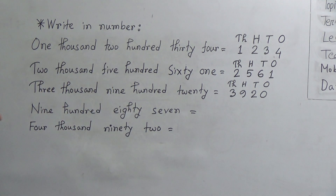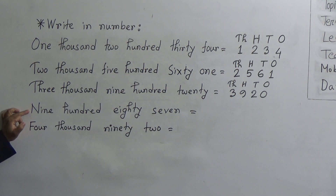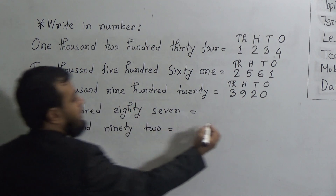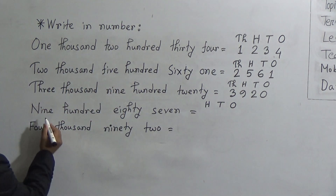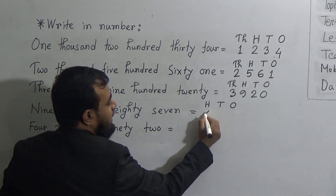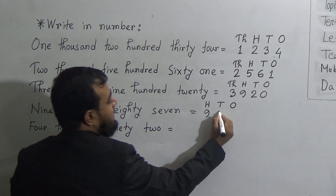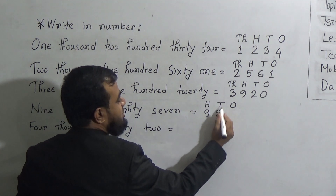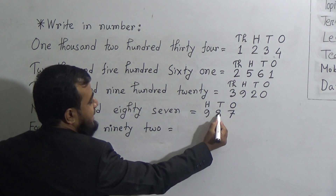The next number is 987. Here the thousands place is absent, so we only need ones, tens, and hundreds places. 900 means we fill the hundreds place with 9. Then 80 means we write 8 in the tens place. And 7 goes in the ones place. So this number is 987.